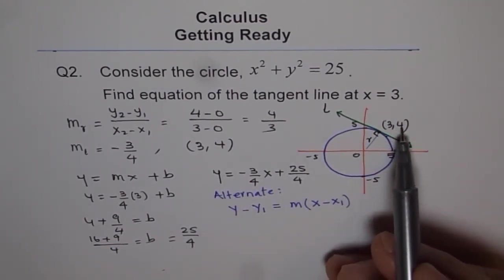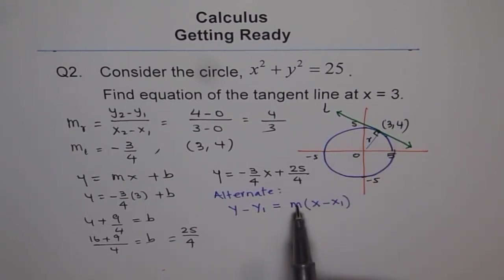Y - Y₁, so plug in 4 here. M, you know, is -3/4. X - 3. And then rearrange them and get your equation in standard form or even in that form. So that was an alternate equation which could be used given point and slope.